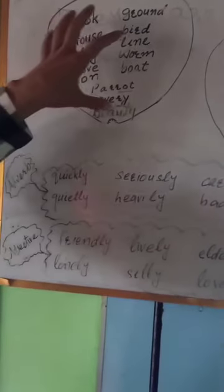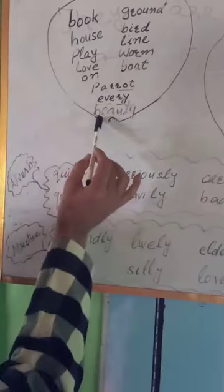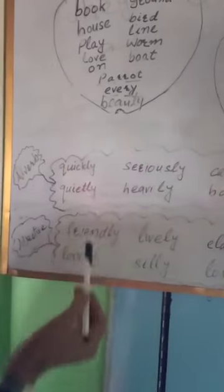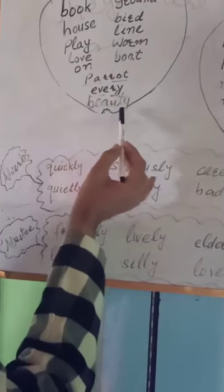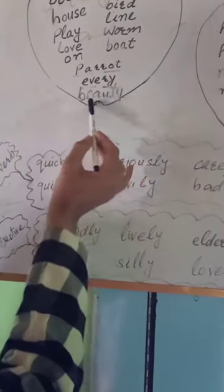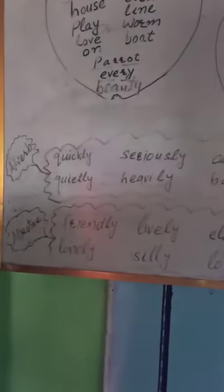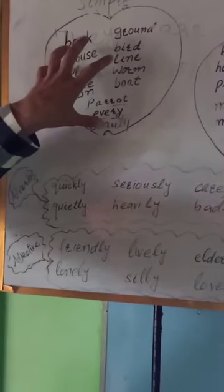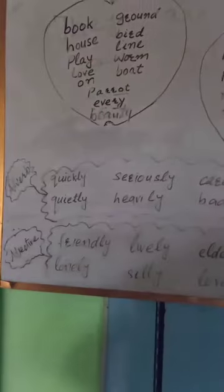Such words are simple words. Although a word like 'beauty' can be divided into 'beau' and 'ty', neither part has meaning of its own, nor can they exist independently. So simple words are the simplest meaningful units having independent existence.